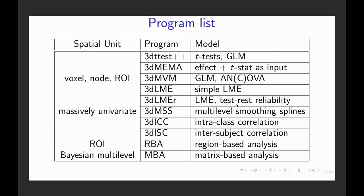The next is MBA — Matrix-Based Analysis. In this case, each subject has a matrix, which is most likely a correlation matrix among a list of regions, like a resting-state connectivity matrix. The traditional approach focuses on each matrix element separately, requiring multiple comparison adjustment. With MBA, you build one model to handle all matrix elements together. The advantage is we don't have the multiplicity issue, though the computation time is a little heavy.